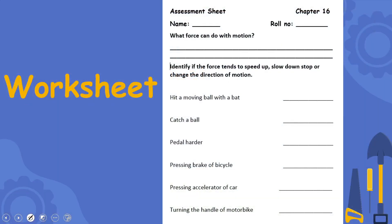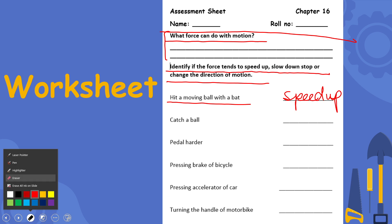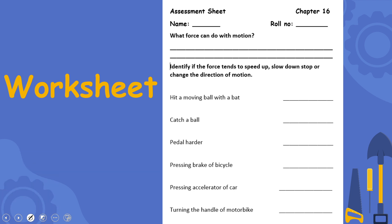My dear students, for practice you can download this worksheet from the description box below this video, or you can get it in print form from your teacher. Write down your name and roll number, and then identify what force can do with motion — it can start the motion, slow it down, or change the direction. For example: hitting a moving ball with a bat — speeds it up; hitting a ball so it changes path — changes the direction; catching a ball — stops the motion.